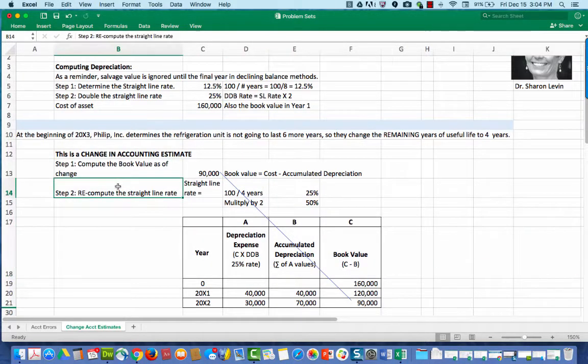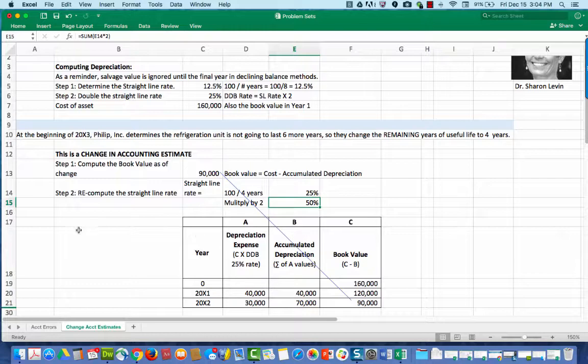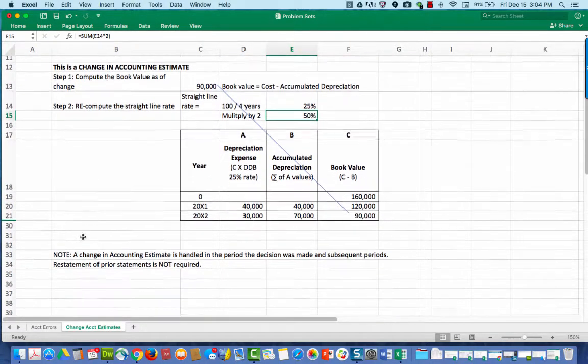Now I need to recompute the straight line rate. It's going to be 100 divided by the number of years remaining. So we have 100 divided by four years is 25% per year. For the straight line rate, we need to multiply that by two to get the double declining balance rate. So that is 50%.